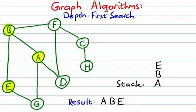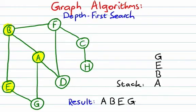Now at the top of the stack we have E. We take a look at adjacent unvisited vertices. B is already visited, so the only one we have is G. We push G onto the top of the stack, we visit G, and we mark G as visited.